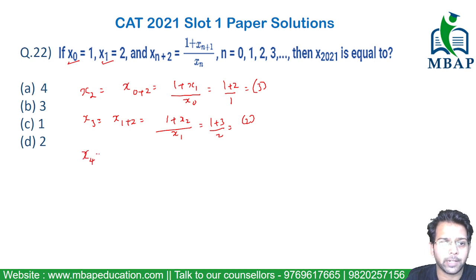Let's go ahead and find the value of x₄. This is x₂₊₂, which will be 1 plus x₃ divided by xₙ, which is x₂. x₃ is 2, so it's 1 plus 2. x₂ you got as 3. 3 by 3 will give you 1.